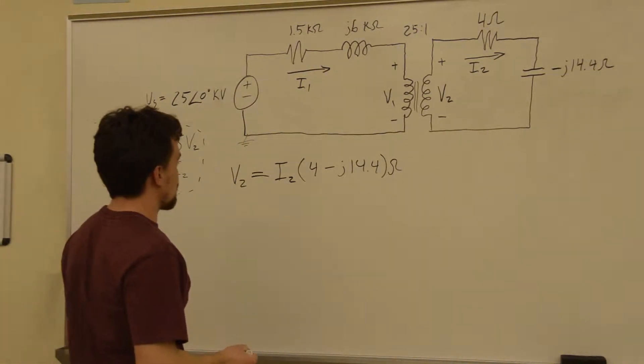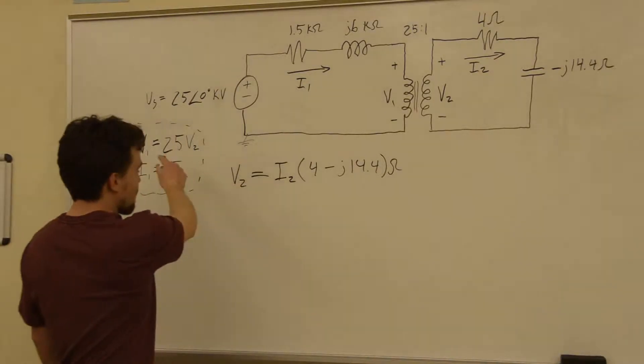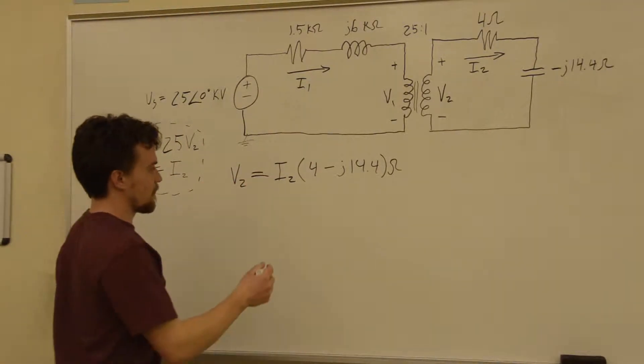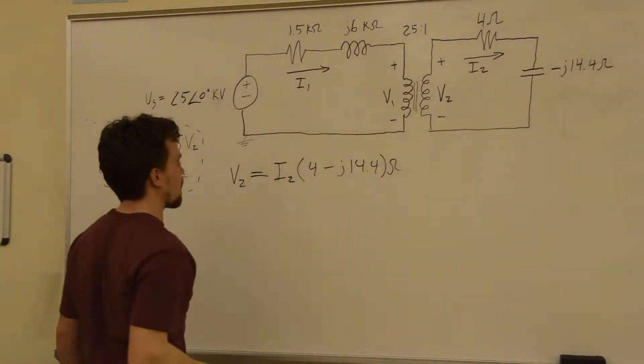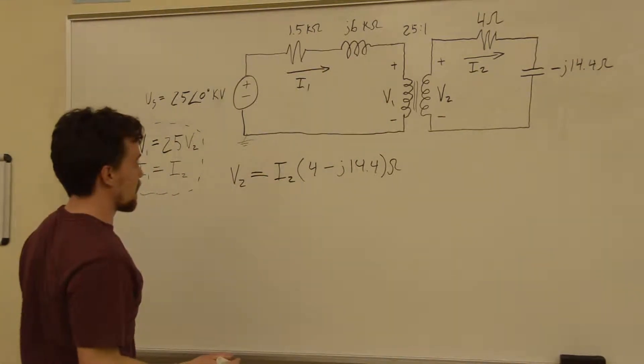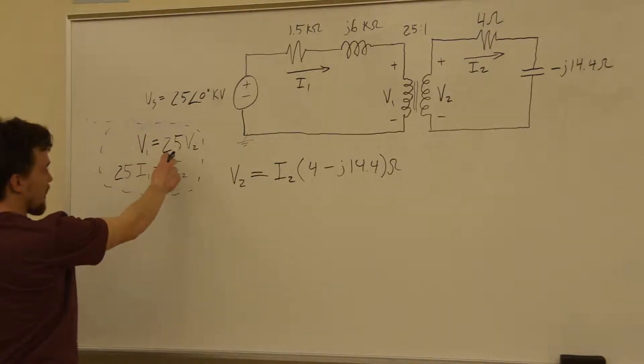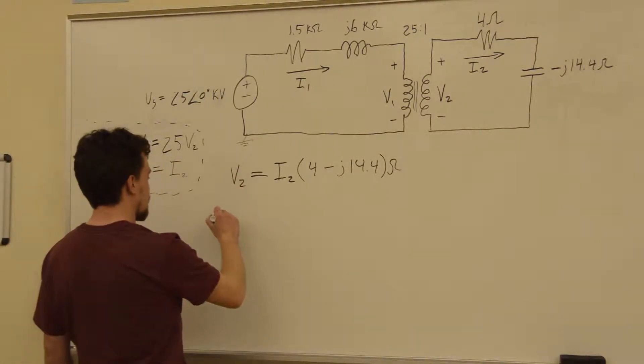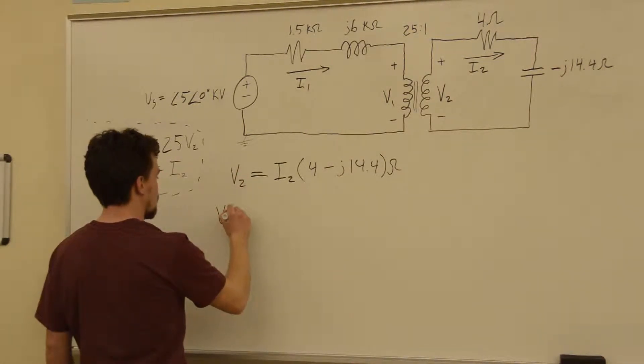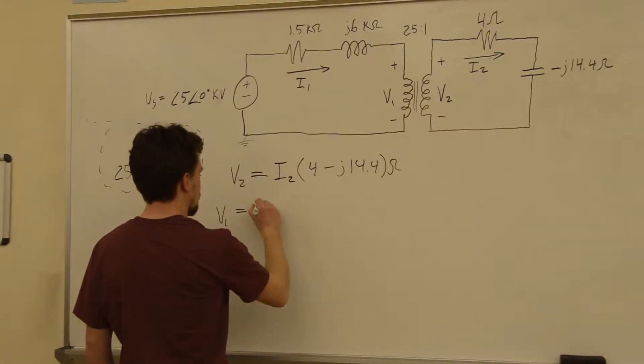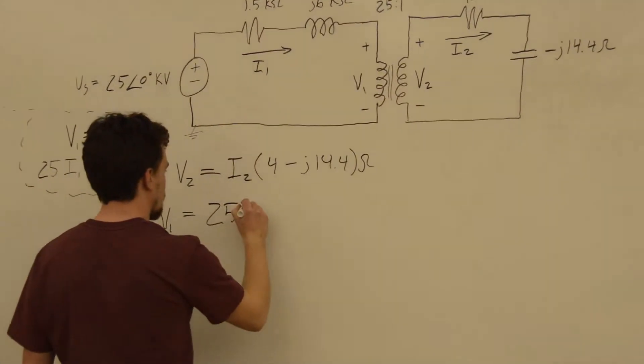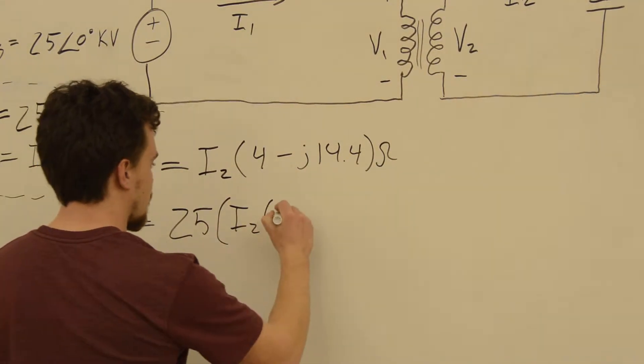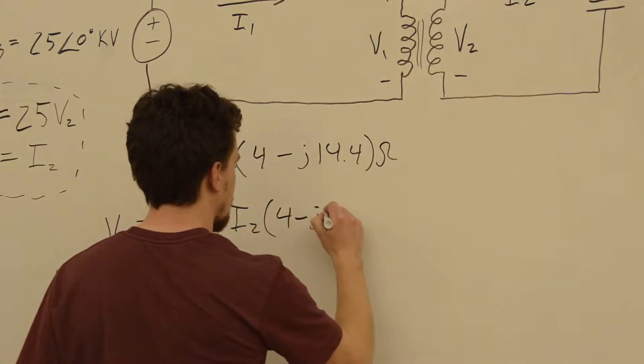Now we can use this equation and these two equations from the transformer to get V1 in terms of I1. So we know that V1 is equal to 25 times V2. We have V2, so V1 is equal to 25 times this. V1 is equal to 25 times I2 times 4 minus J 14.4.